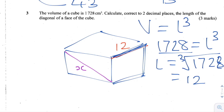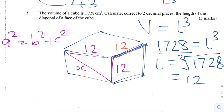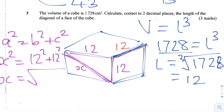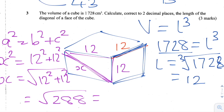To find the diagonal of a face, call it X. The face has two sides both of length 12. Using Pythagoras' theorem — a squared equals b squared plus c squared — X squared equals 12 squared plus 12 squared. So X equals the square root of 12 squared plus 12 squared, which is the square root of 288, equal to 16.97 to two decimal places.